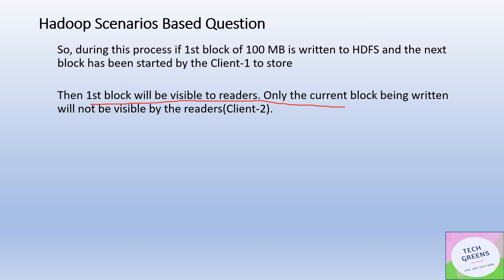The next block, block B, which is still under-write, would not be visible and would not be available for read. Even though we have the full file of 500 MB, only the partial 100 MB is successfully written. If client two tries to read the same file concurrently, that is possible for the successfully written blocks. The underlying theme is: if a particular block is successfully written, replicated, and the acknowledgement is already with the name node, that block's data would be available for simultaneous or concurrent read.